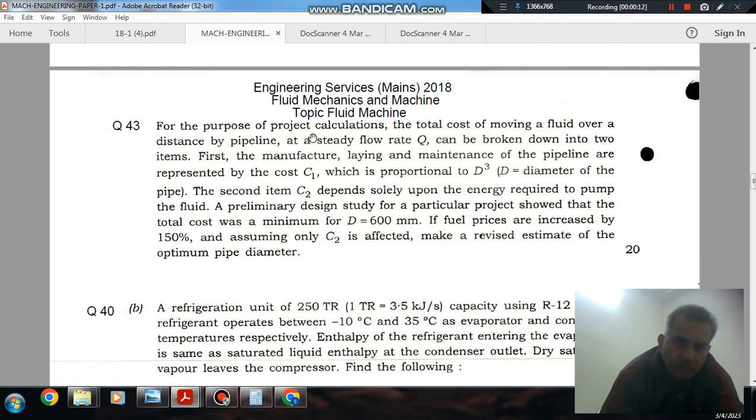For the purpose of project calculation, the total cost of moving a fluid over a distance by pipeline at steady state flow rate can be broken down into two items. First, the manufacture, laying and maintenance of the pipeline are represented by the cost C1, which is proportional to D³, where D is the diameter of the pipe.